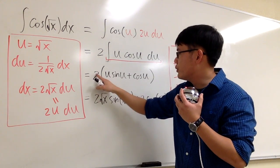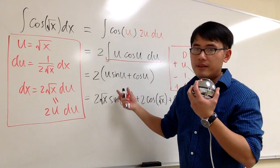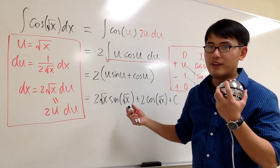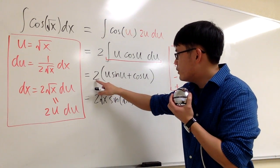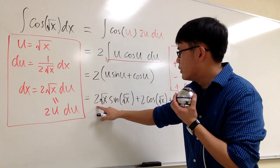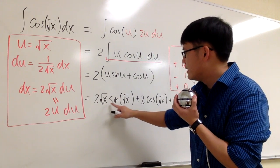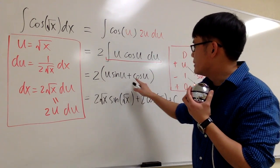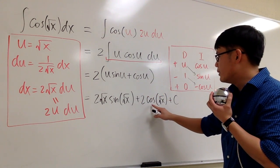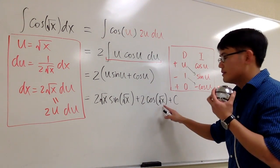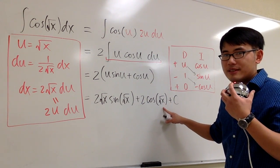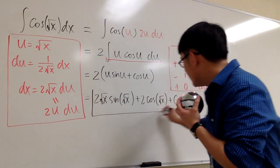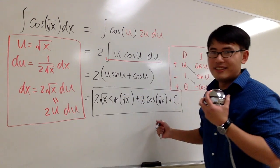So don't forget to distribute the 2 into the parentheses, and then we can change u back to square root of x. Final answer: we have 2 times u·sine(u) which is 2 square root of x times sine of square root of x, and then 2 times positive cosine u, so we have plus 2 cosine of square root of x, plus C at the end. And this right here is the answer.